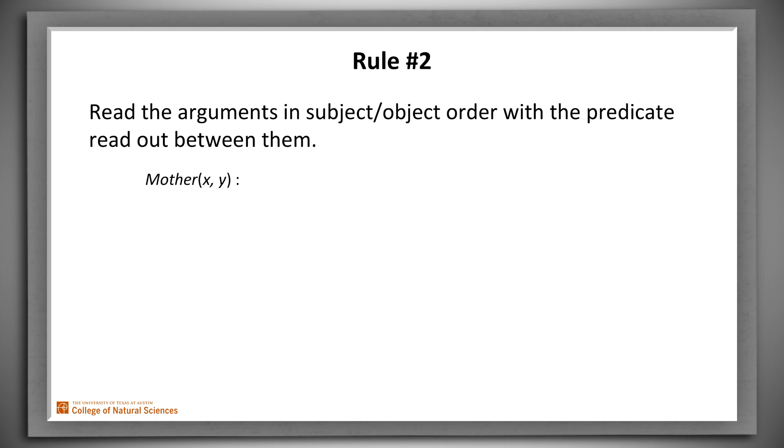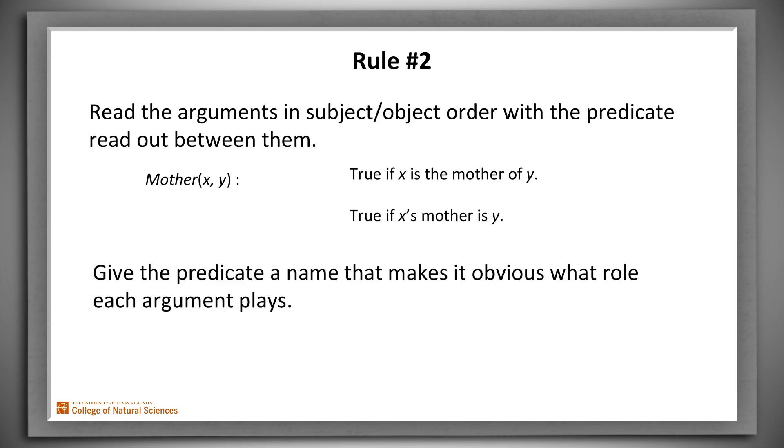Here's another example of rule two. We could define the predicate Mother of X and Y to be true if X is the mother of Y, but maybe it seems equally natural to say that it's true if X's mother is Y. We can solve this problem by changing the name of the predicate. We can change it to Mother_of. Now, the only natural reading is that X is the mother of Y.